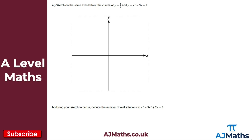Looking at question 1, we're asked to sketch on the same axes y equals 1 over x, and y equals x squared minus 3x plus 2. Let's begin with y equals 1 over x — this is just a reciprocal curve. We have an asymptote to the x-axis and an asymptote to the y-axis, so we keep getting closer and closer to each axis but never actually touch it.